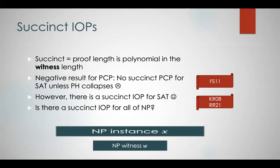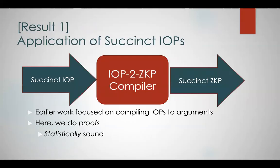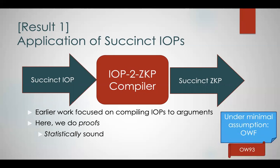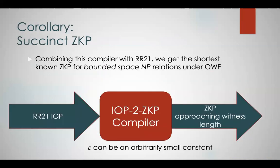Why do we care about succinct IOPs? As a first result, we show an application of succinct IOPs: a compiler that takes a succinct IOP and produces a succinct zero-knowledge proof. We're talking about proofs here with statistical soundness — soundness holds even against an unbounded cheating prover; this is not an argument. This compiler requires only the minimal assumption of one-way functions. Applying it to the succinct IOP of Ronsvi and Rothblum, we get the shortest known zero-knowledge proofs for bounded space NP relations, with communication complexity approaching the original witness length.